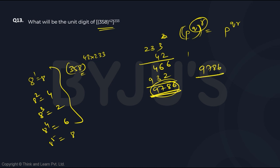So 9786 when you divide by 4, 4, 2's are 8, 4, 4's are 16, 4, 4's are 16, 4, 6's are 24, the remainder is 2.